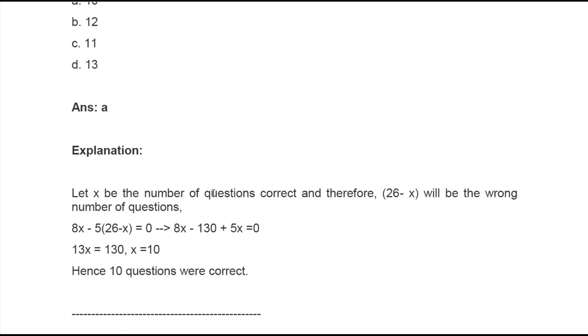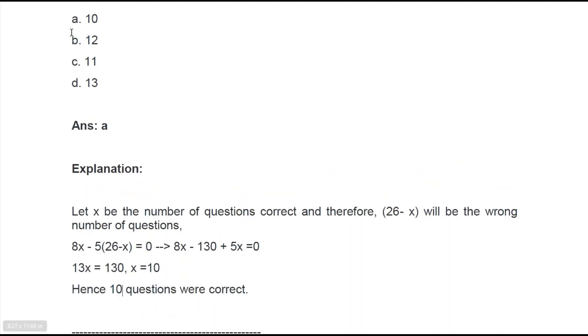Well, they have said that the answer is A, that is 10. Here you go. They have solved it in the same way. Let x be the number of questions correct. They have solved it in the same way that I have told you. So upon solving the equation, we get 10 as the correct answer. And 10 is given in the options, that is option A. Alright, moving on to the next question.